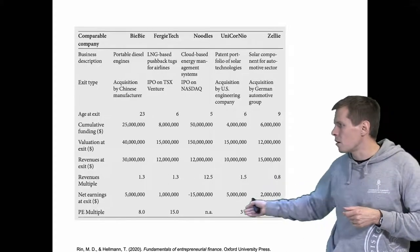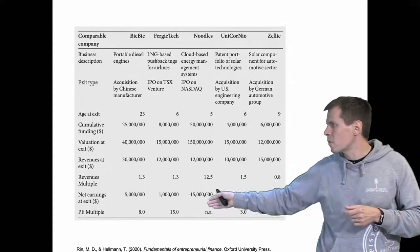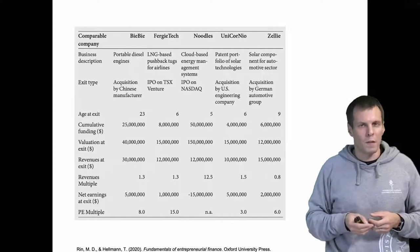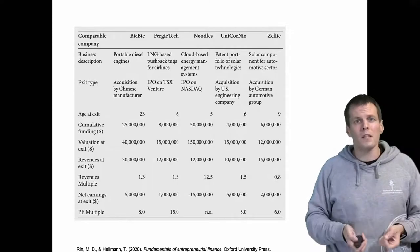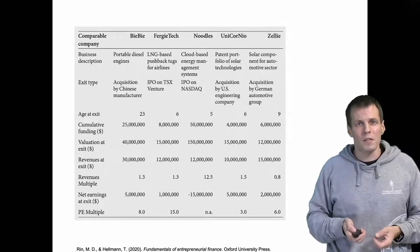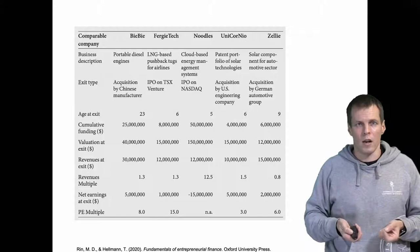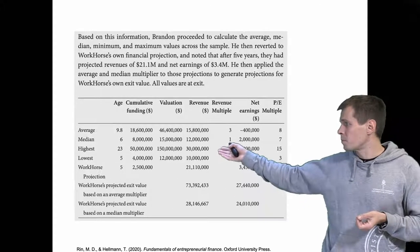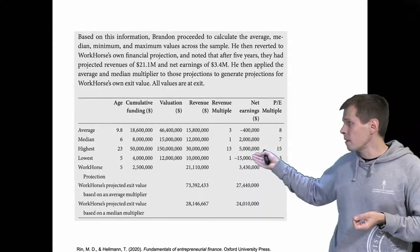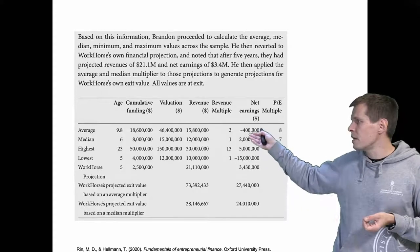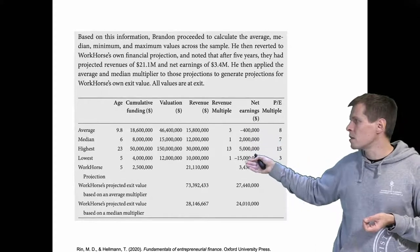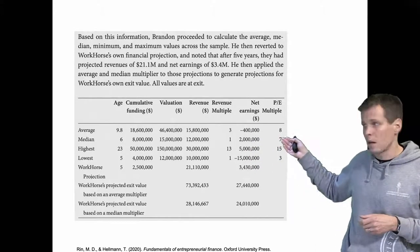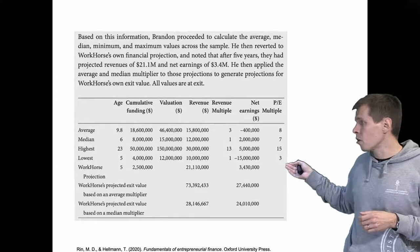We also have price-to-earnings multipliers ranging between 3 and 15. We then apply these multipliers for scenario analysis or projections, looking at the average, median, highest, and lowest values for both the revenue multiplier and the PE multiplier.